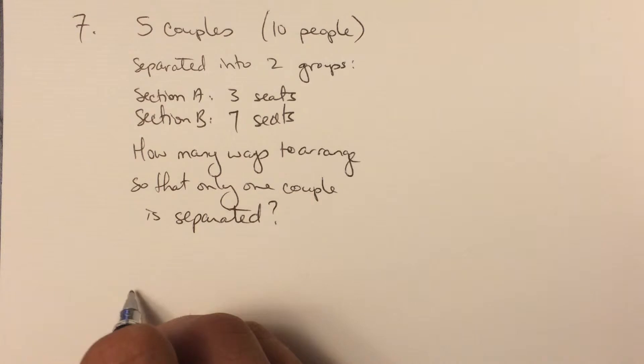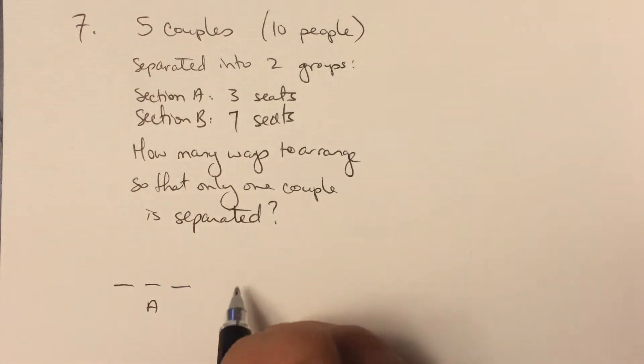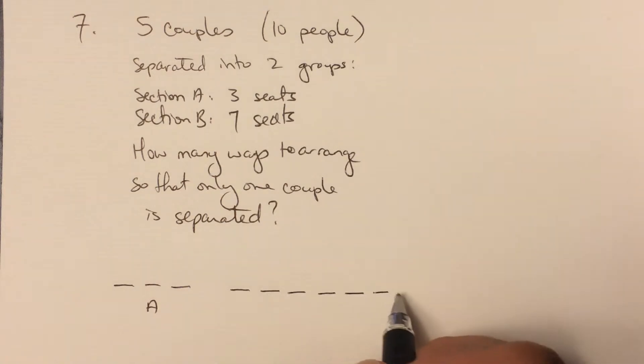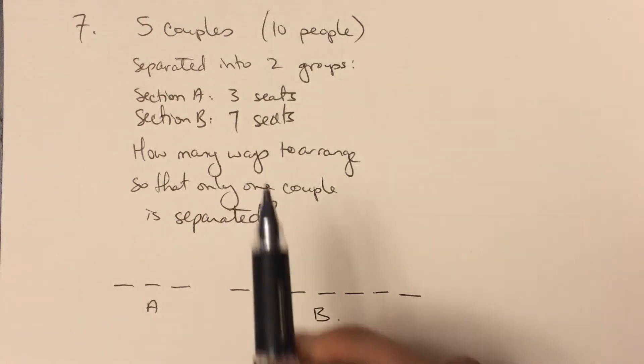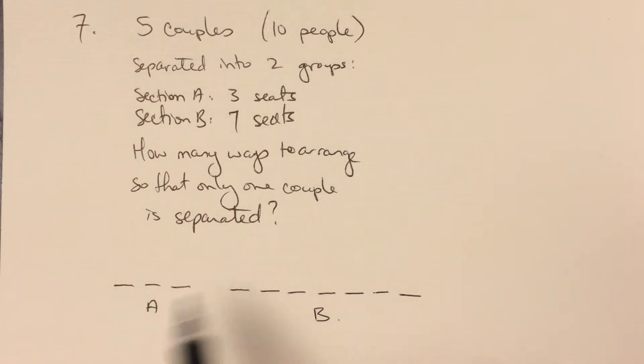So to solve this, let's draw a little picture of our two sections. Here's section A, I've got three seats in section A, and then let's draw out section B as well: one, two, three, four, five, six, seven. And I'm going to start by filling up section B first.